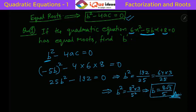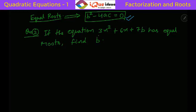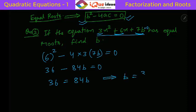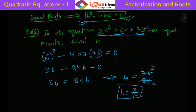Now let us take another question: if the equation 3x squared plus 6x plus 7b equal to 0 has equal roots, find b. Here a is 3, b the coefficient of x is plus 6, and c the constant term is 7b. Applying b squared minus 4ac equal to 0: 6 squared minus 4 into 3 into 7b equal to 0, giving 36 minus 84b equal to 0. So b equals 36 upon 84, which simplifies to 3 by 7.